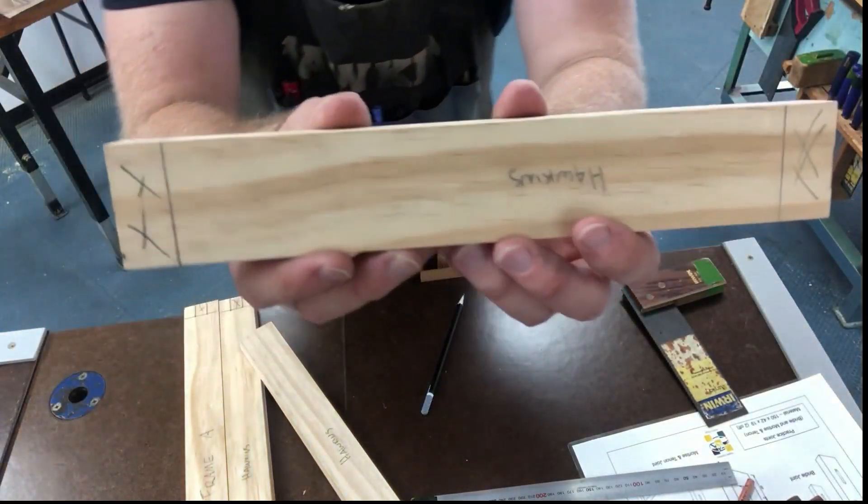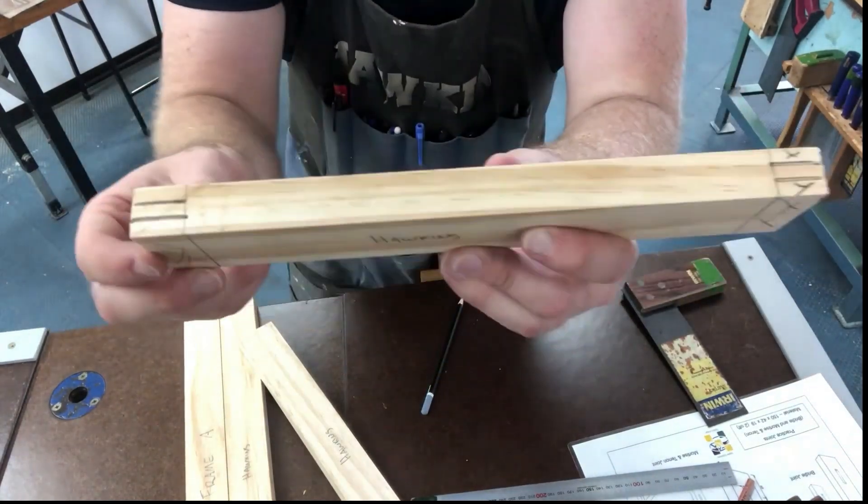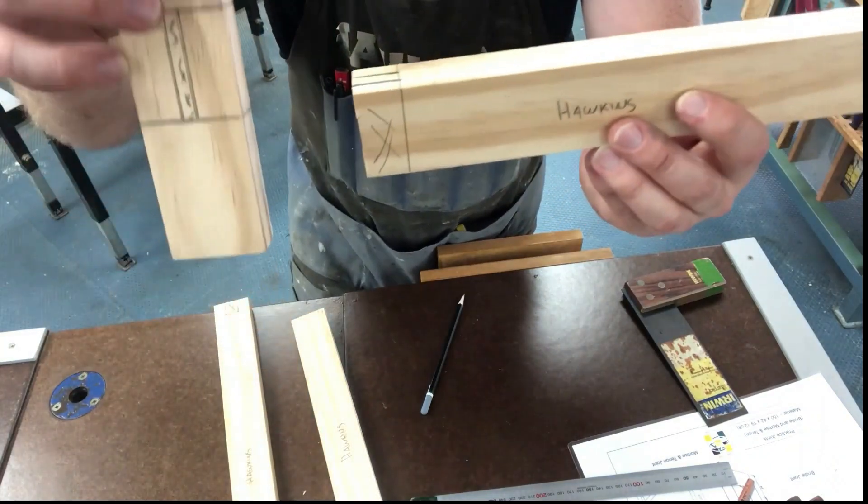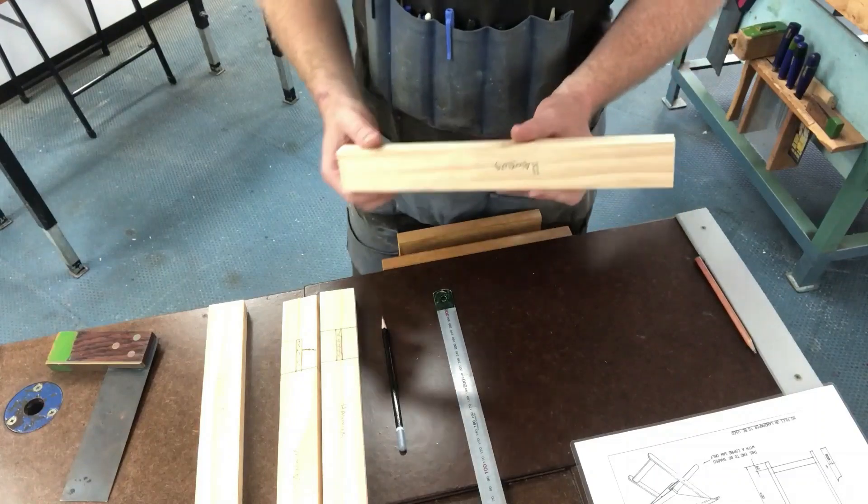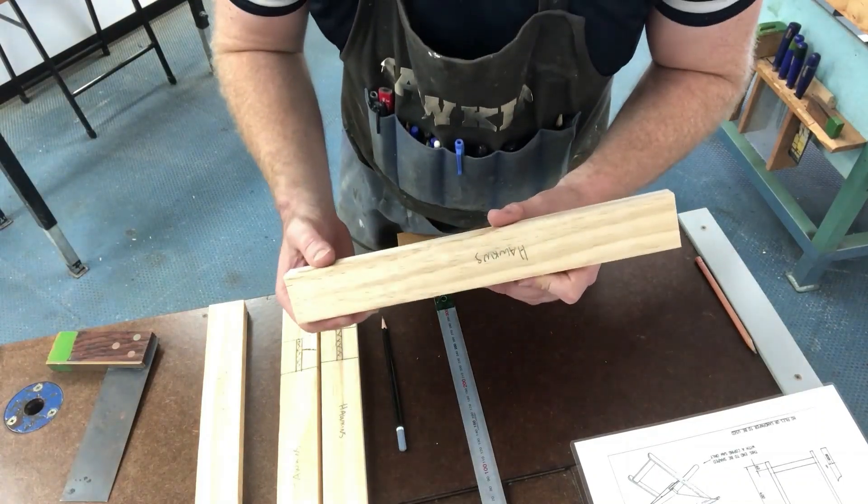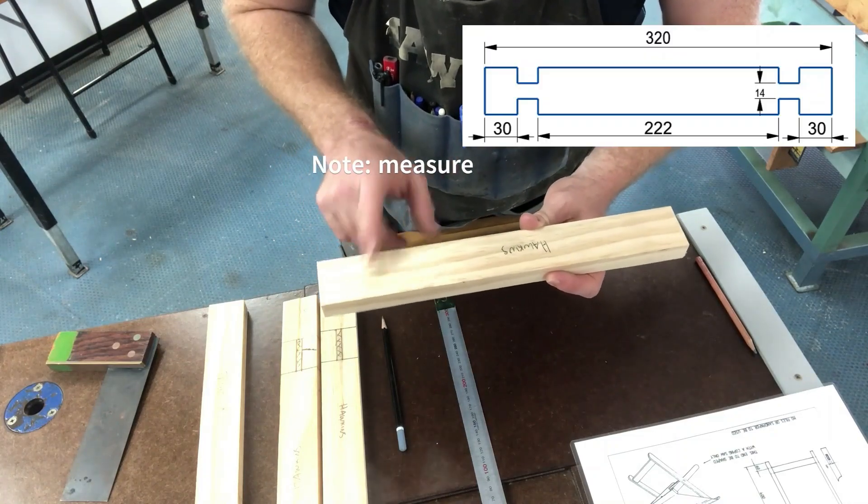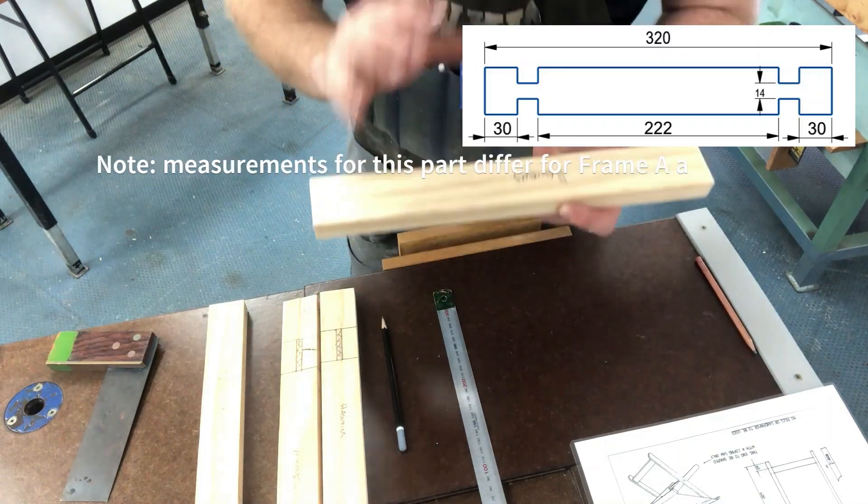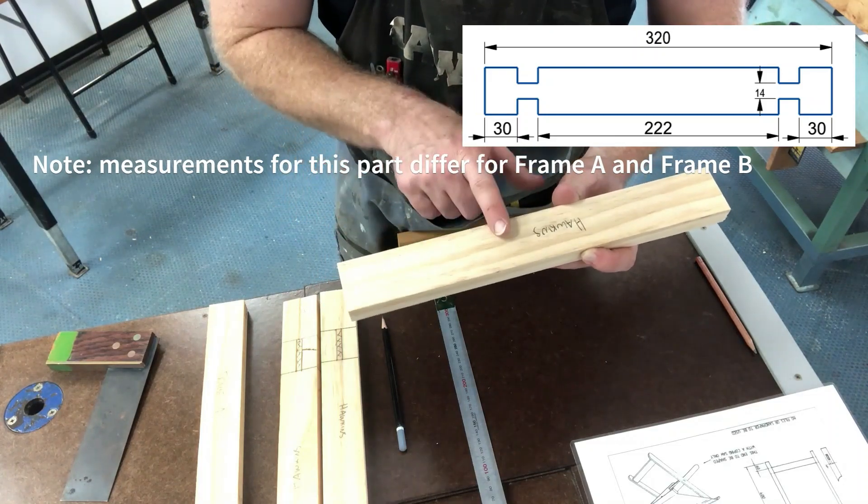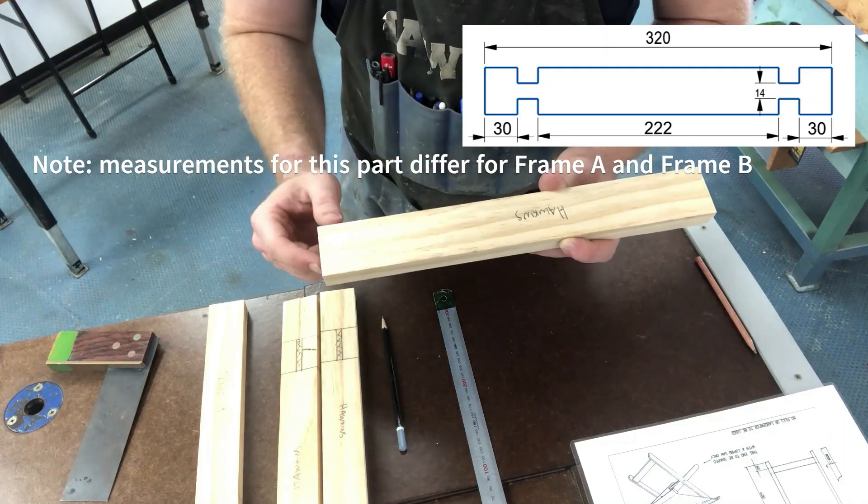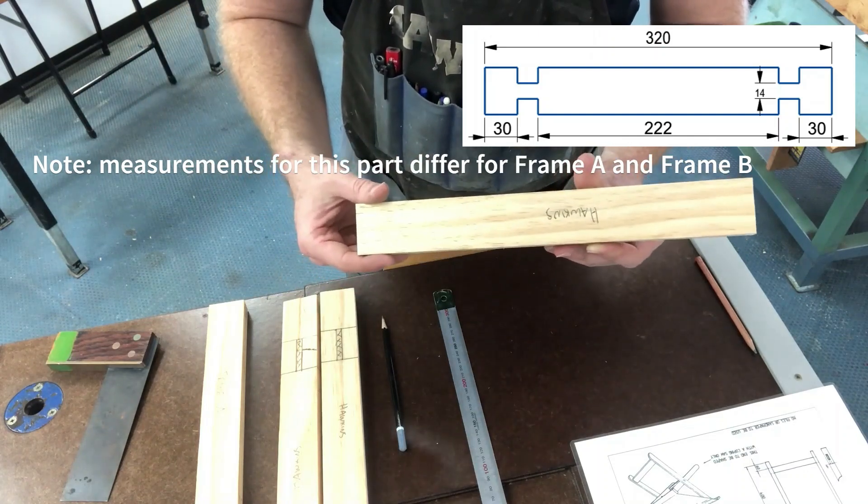That's now your support rail, what it should look like. You have a tenon on either side - they will fit into the mortise. The next thing I'm going to mark out is the top of the frame, which is the seat. That will be a bridle joint, so we will mark out the bridle joint here. It's important to understand and to know that this measurement for frame A is going to be different on frame B, so just make sure you're referring to the plans because frame B fits inside frame A.